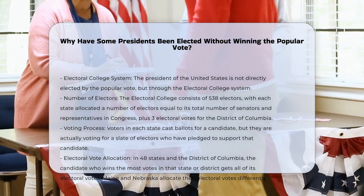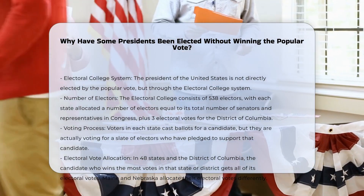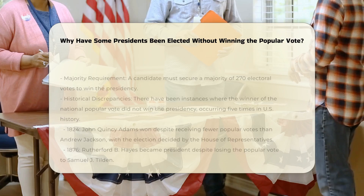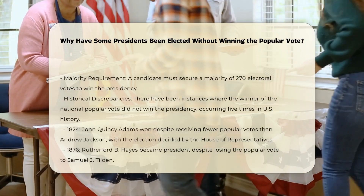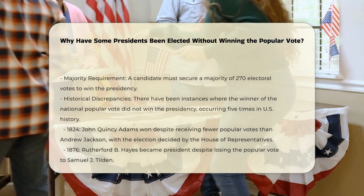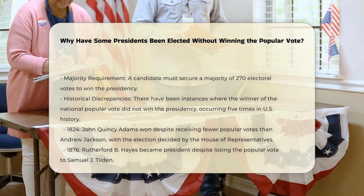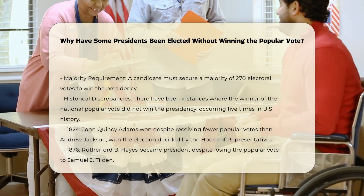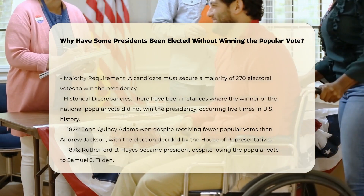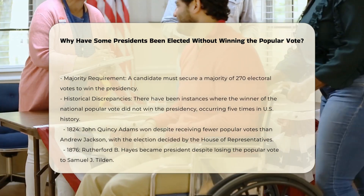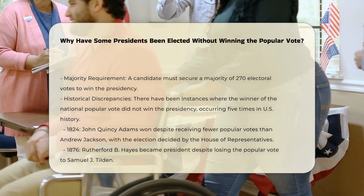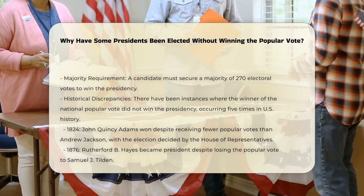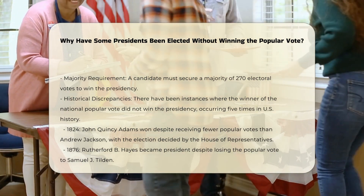During a presidential election, voters in each state cast their ballots for a candidate, but they are actually voting for a slate of electors who have pledged to support that candidate. In 48 states and the District of Columbia, the candidate who wins the most votes in that state or district gets all of its electoral votes. Maine and Nebraska allocate their electoral votes differently, giving two to the statewide winner and the rest based on congressional district winners.